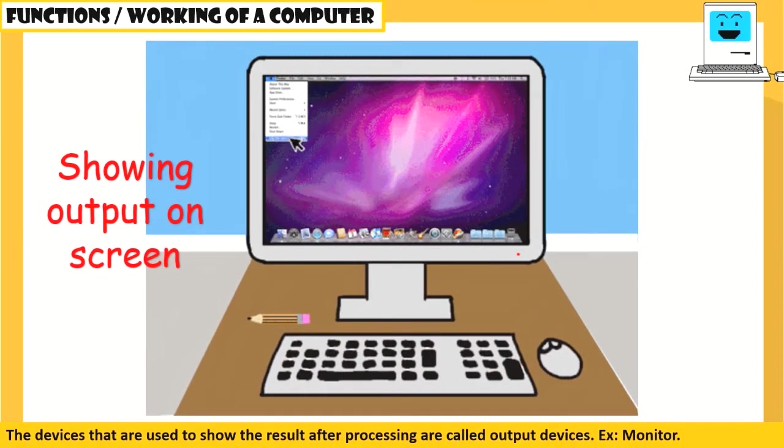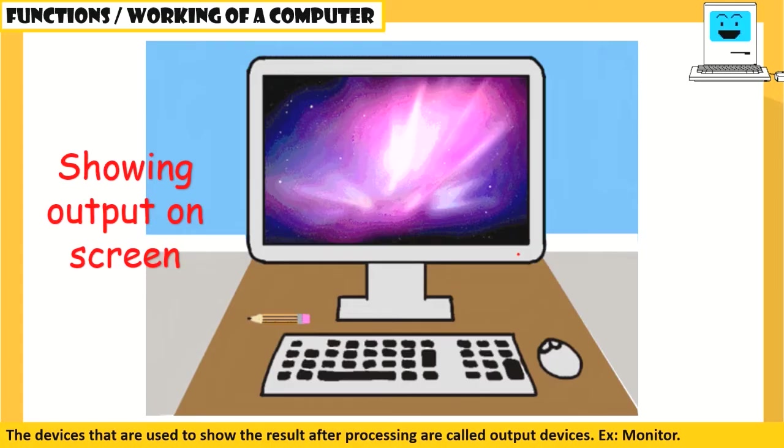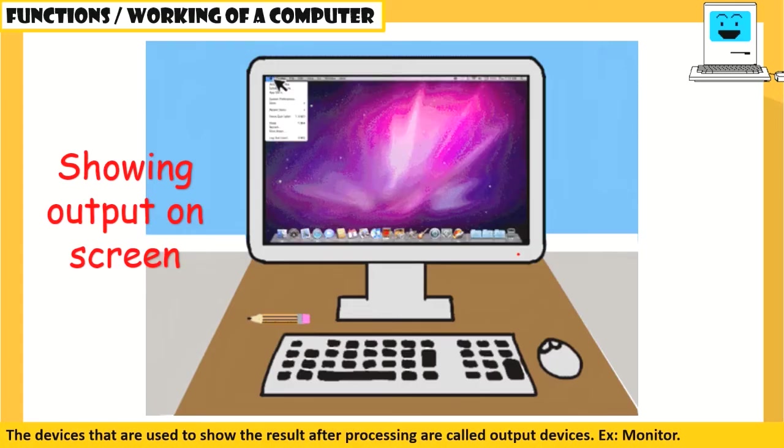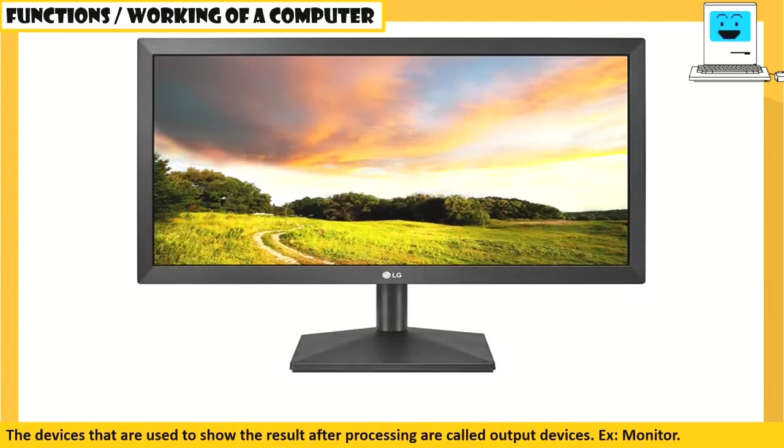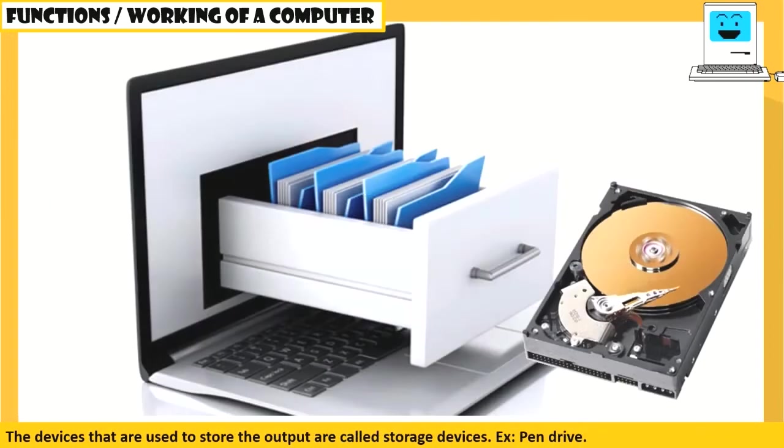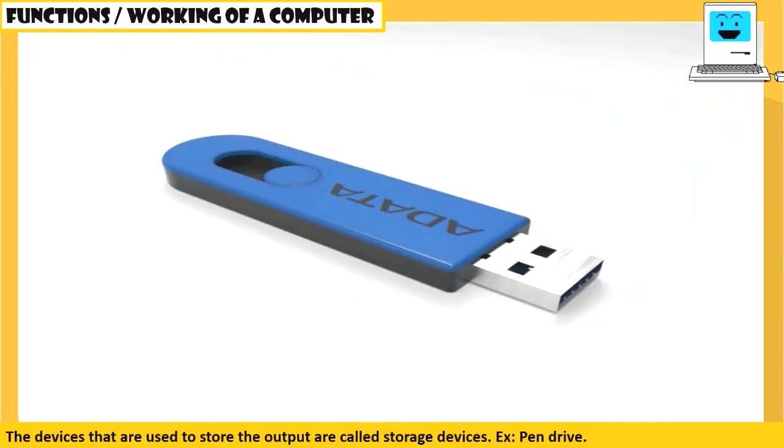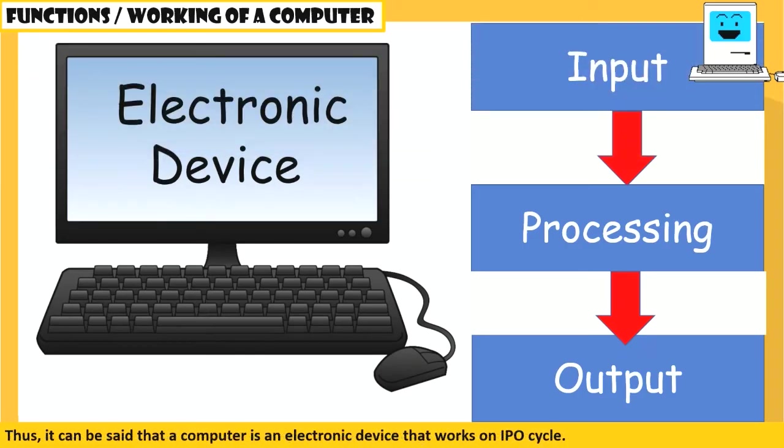The devices that are used to show the result after processing are called output devices, example: monitor. The devices that are used to store the output are called storage devices, for example, pen drive. Thus, it can be said that a computer is an electronic device that works on the IPO cycle.